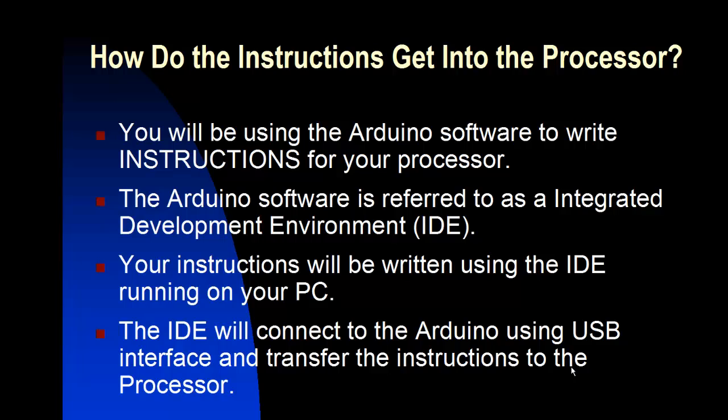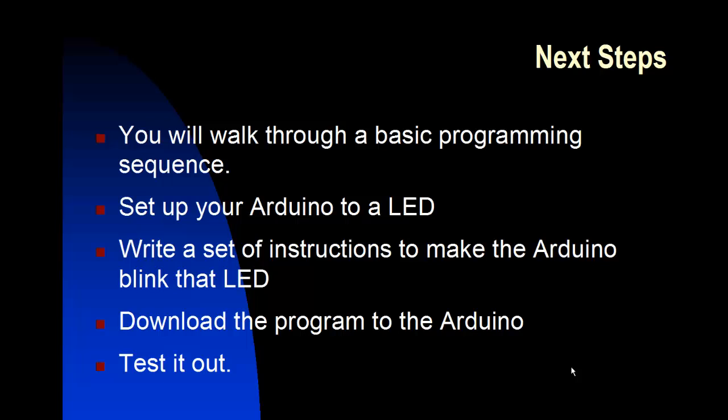So how do we get our instructions into the Arduino processor? You'll be using Arduino software to write the instructions — this is called an integrated development environment, or IDE. Your instructions are written using the IDE on your PC in a language you can understand. The IDE connects to the Arduino using a USB interface and transfers the instructions into the processor, where they are programmed into flash memory. Next steps will walk through a basic programming sequence: we'll set up the Arduino with an LED, write instructions to make it blink, download the program, and test it out.